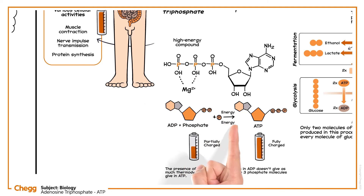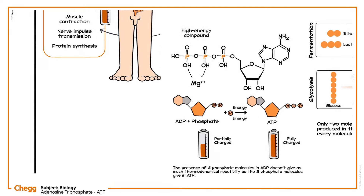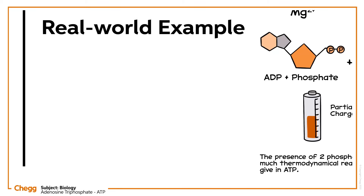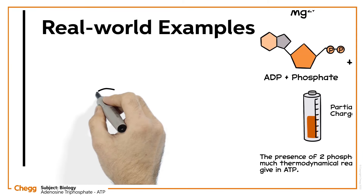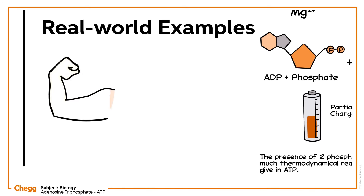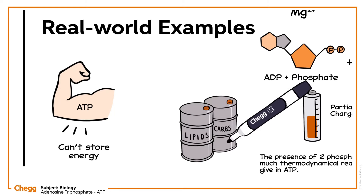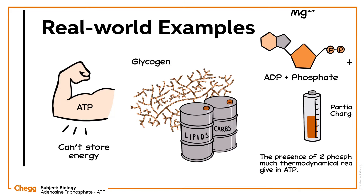One phosphate is released in the form of inorganic phosphate during ATP hydrolysis to release energy. Cells need energy to drive metabolic events that would not happen naturally, to transfer necessary molecules across membranes, and to do mechanical labor such as moving muscles. ATP fulfills these energy needs. However, chemical energy cannot be stored by ATP. Lipids and carbohydrates such as glycogen serve this purpose. ATP is created when energy from storage molecules is required by the cell.